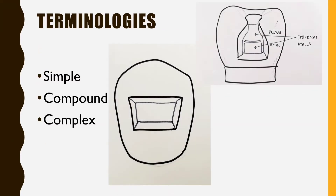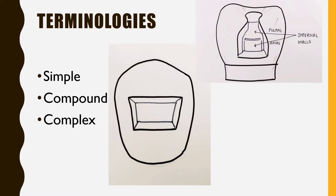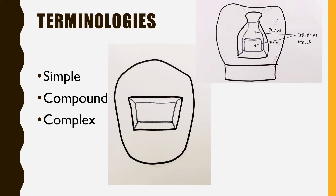A tooth preparation is called simple if only one surface of the tooth is involved — for example, the occlusal surface of a premolar. It is called compound if two surfaces are involved, such as the occlusal and proximal surfaces. It is called complex if three or more surfaces are involved — for example, the MOD preparation, which stands for mesio-occlusal-distal.